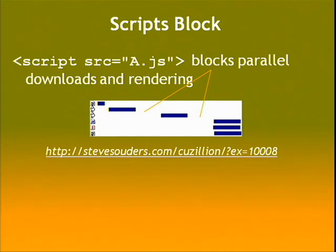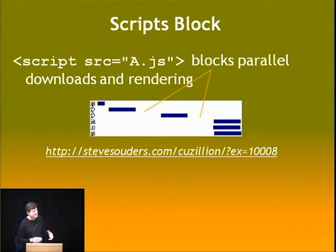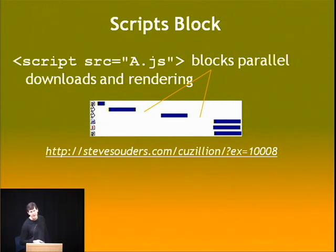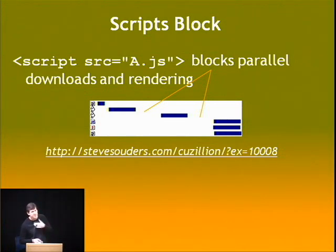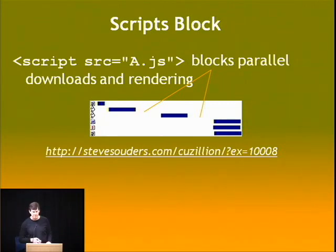Here's an example from the Kazillion website, which lets you construct different test scenarios and see how they work in different browsers. This example has two scripts at the beginning, each taking a second to download and execute, plus an image, a stylesheet, and an iframe. The image, stylesheet, and iframe all load in parallel, but the scripts block everything else in the page while they download and execute. This was done in IE7 but is true in almost all browsers.